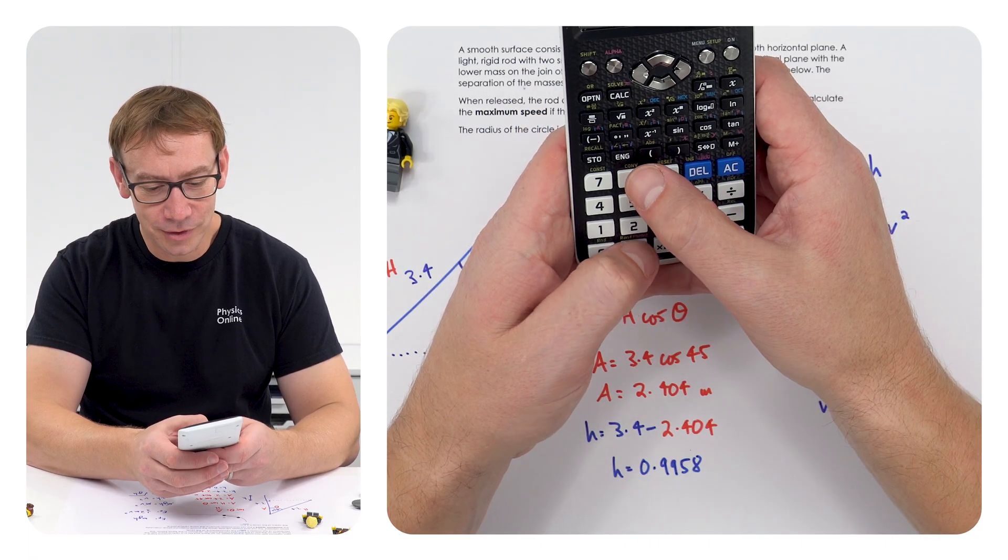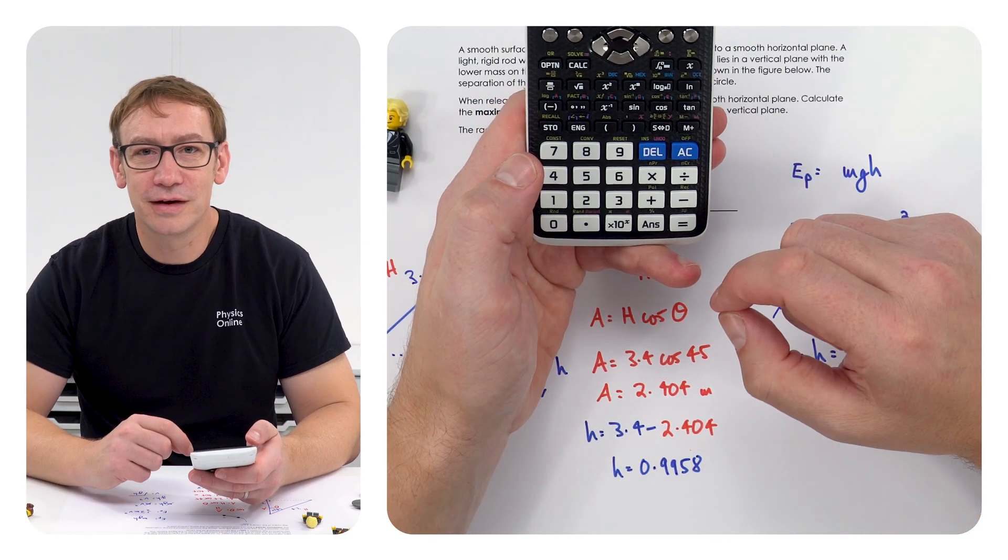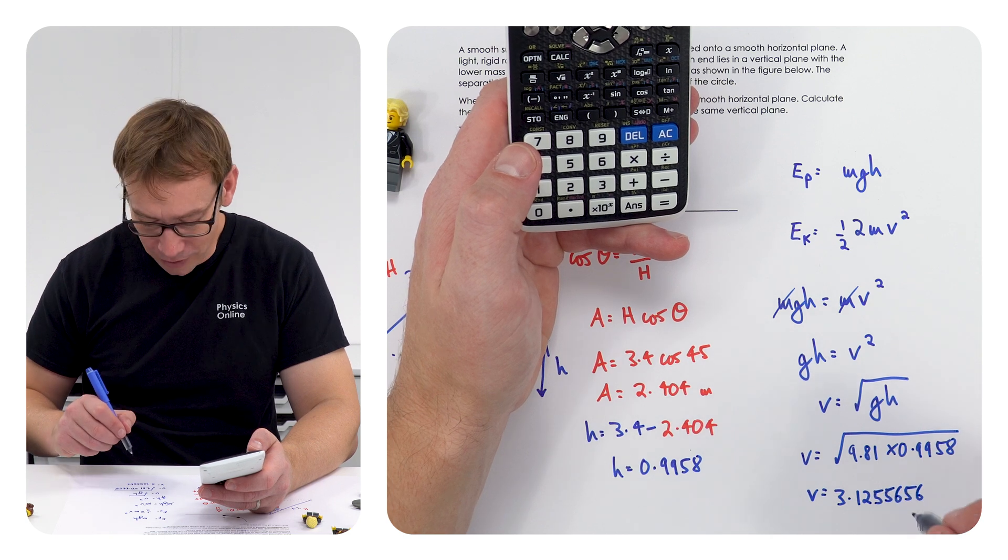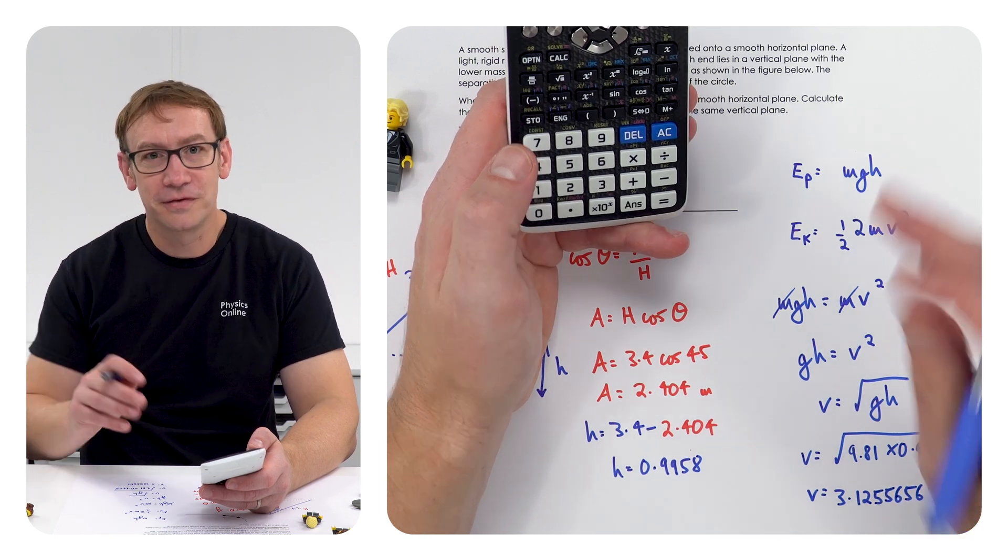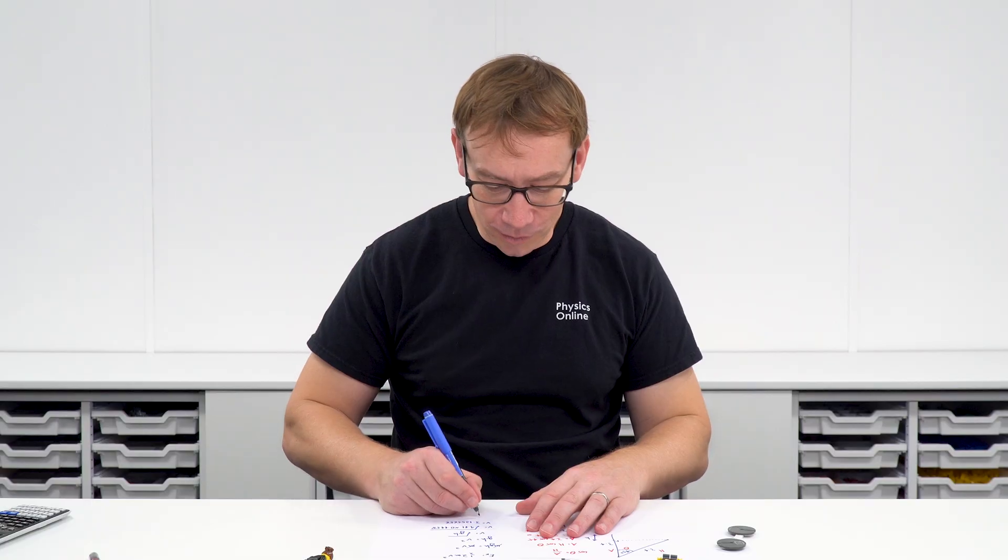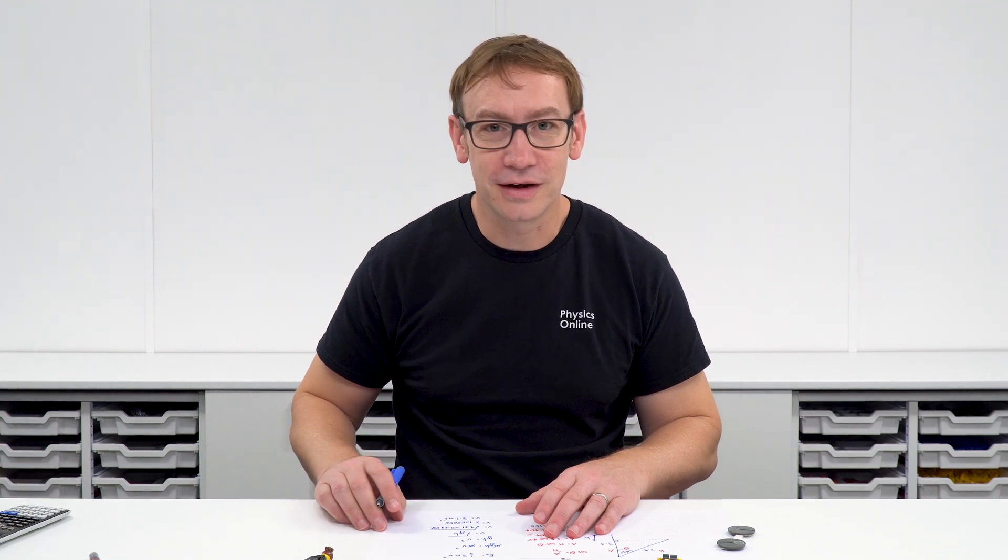I'm going to multiply that by 9.81 and then we're going to square root that, and we find that the answer equals 3.125 or actually 3.1256556. But of course we were only given the radius to two significant figures, so really we can say that final velocity is 3.1 meters per second.